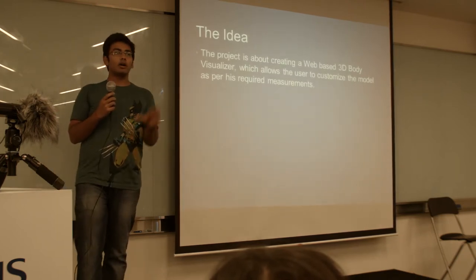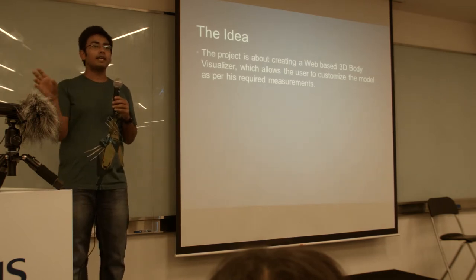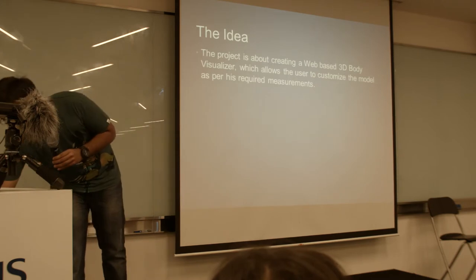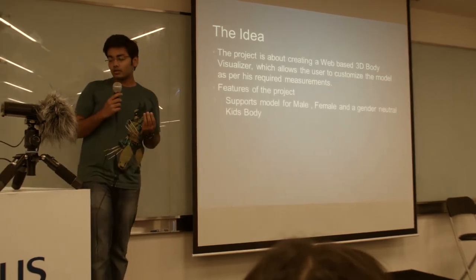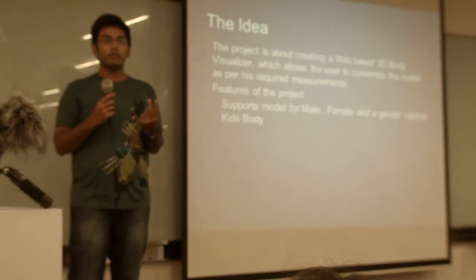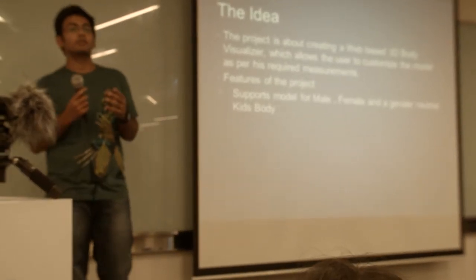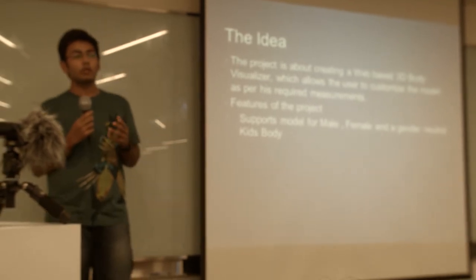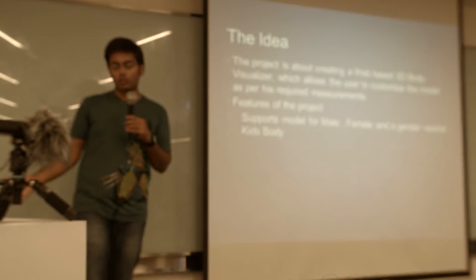Basically you have a model in front of you and you have a set of sliders which you can slide to change the body according to your preference. Currently it supports 3 models: one for a male body, one for a female, and a gender-neutral kid's body. Because mostly it's a kid of 11 years old and we don't need many features, so I developed a gender-neutral body.